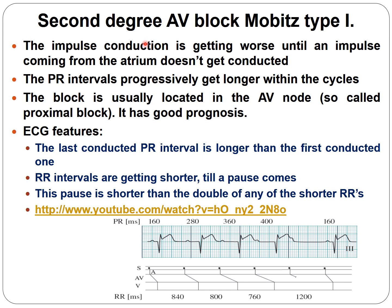In Mobitz Type 1 second degree AV block, the impulse conduction gets progressively worse until an impulse from the atrium is not conducted. The PR intervals progressively lengthen within the cycle. The block is usually located in the AV node — a proximal block — which carries a good prognosis. ECG feature: the last conducted PR interval is longer than the first conducted PR interval. The rhythm is arrhythmic; marking the PP intervals shows they are regular, with an unconducted P — confirming second degree AV block.